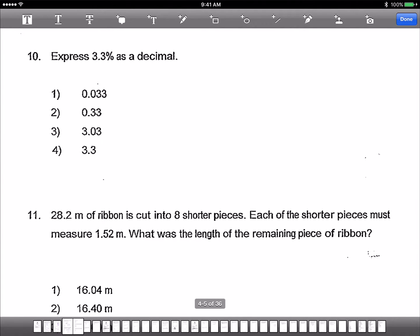Next, express 3.3% as a decimal. 3.3% is actually 3.3 divided by 100. So it cannot be this, it cannot be this, it cannot be this. It's just this. Confirm 1.